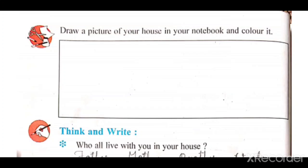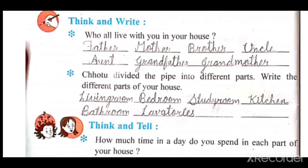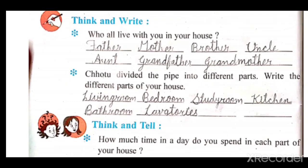Draw a picture of your house in your notebook and color it. This activity, do it by yourself. Here two questions are given. Who all live with you in your house? Basically, in your house, father, mother, brother, uncle, aunt, grandfather and grandmother live — you have to write those down. The second question: Chotu divided the pipe into different parts — what are the different parts of your house? In our house, living room, bedroom, study room, kitchen, bathroom and lavatories are present.